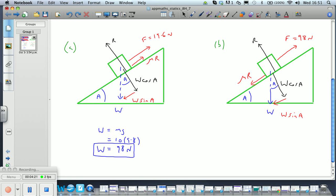So for situation A, our parallel forces will be F = 19.6 + μR = W sin A. We also have perpendicular forces which will give us R = W cos A.